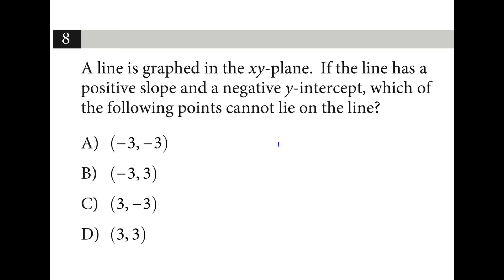If the line has a positive slope and a negative intercept, so it's going to cross down here and go up somewhere, which of the following points cannot lie on the line. Negative 3, 3 would be somewhere up here, which is not going to fit.